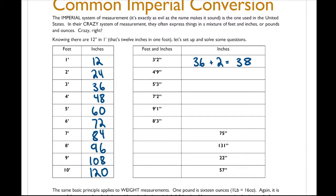Going the opposite way: 75 inches is how many feet and inches? Look at the chart and find the largest entry that doesn't exceed 75 — that's 6 feet, which equals 72 inches. Take away 72 from 75, and there are 3 inches remaining. So 75 inches equals 6 feet and 3 inches. I'll pause the video here and give you a chance to complete the rest of the table using these steps.